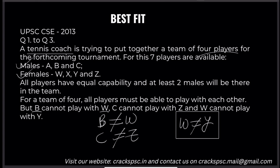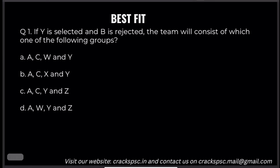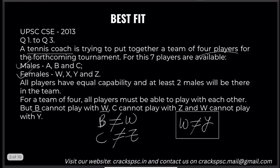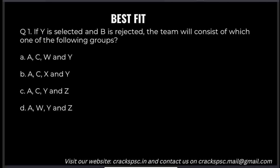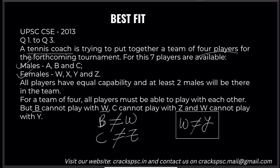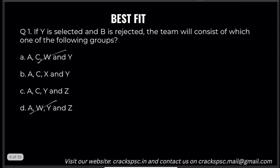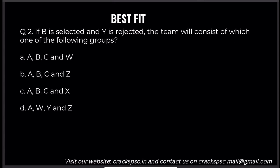So let's try to fit this. If Y is selected and B is rejected, the team consists of which of the following? Looking at option A — W cannot go with Y, so W is out. With Y and C, C cannot go with Z, so the answer is B. That is the correct answer — very simple, very easy.